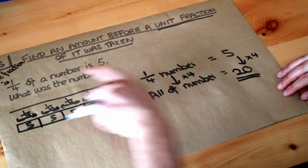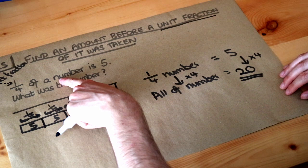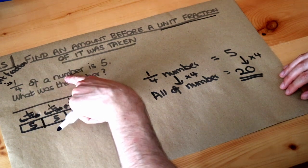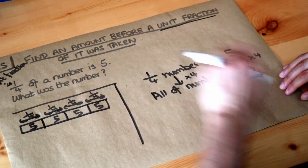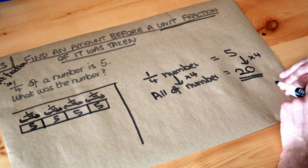And let's just check that. A quarter of a number which we know is 20 now, a quarter of 20 is what? Well to find a quarter of 20, you just do 20 divided by 4, which is indeed 5. So that is the right answer.